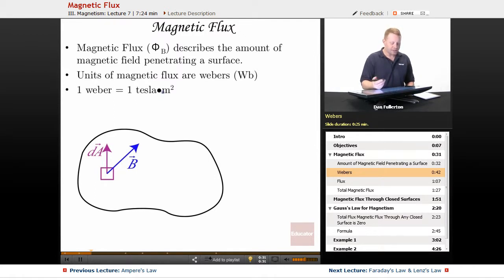And just like we did previously as we define this, we'll take a small bit of area on the surface, we'll define the normal to it dA going from inside to outside if it's a closed surface, and some magnetic field that's penetrating through that.